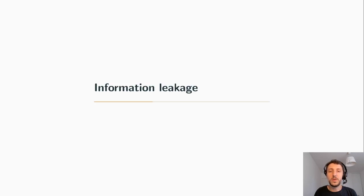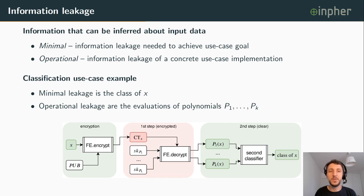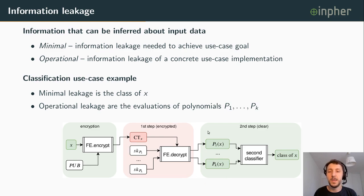To measure information leakage in these use cases, we start with a definition. Information leakage is the maximum information that can be inferred about input data from available plaintext data. We call leakage minimal if it is only the information needed to achieve the use case goal — in classification, this is the class of X and all information inferable from it. We also introduce the notion of operational leakage, which is the information leakage of a concrete implementation — in functional encryption-based classification, this is the evaluations of polynomials P1 through PK over X.